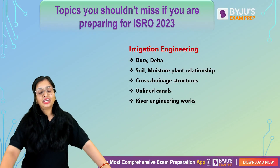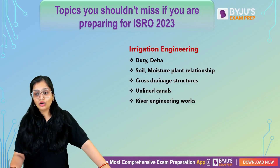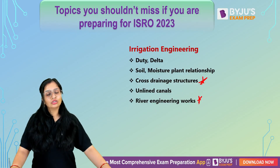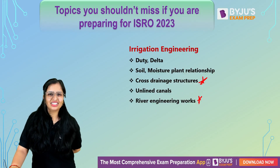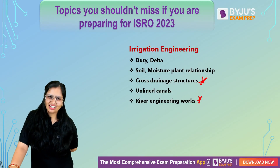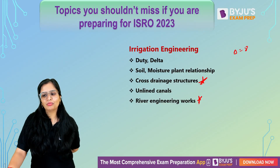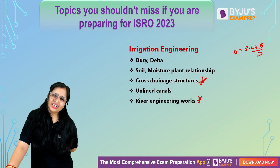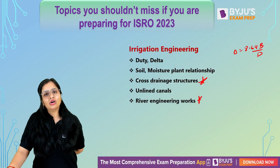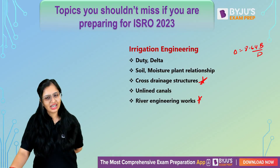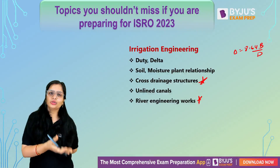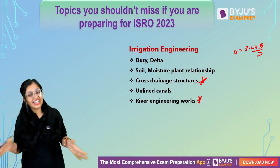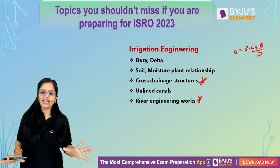For Irrigation Engineering — cross drainage structures are important and river engineering works have also been asked. Duty and delta: remember delta equals 8.64B divided by D. Wilting point, hygroscopic water, and field capacity — questions on these have been asked. Lacey's theory and Kennedy's theory — simple formula-based questions. You don't need to go very deep but you should have an idea about these topics.